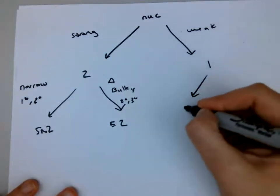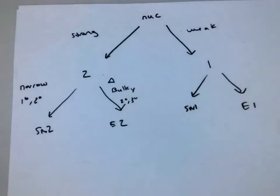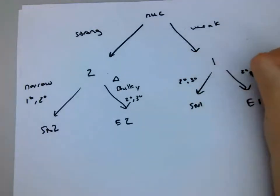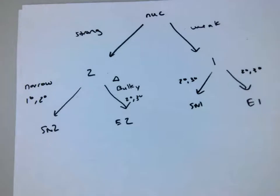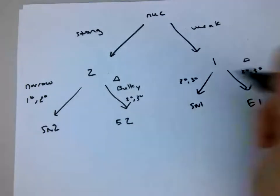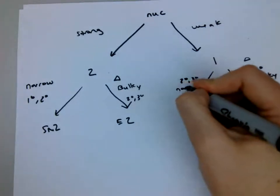Now for SN1 versus E1, this one's harder. Because they're a carbocation, they both are actually going to need a secondary or tertiary. Primary carbocations are not really stable. Heat is still going to favor E1, and bulkiness is still going to favor E1. For SN1, really the biggest thing is secondary or tertiary or if it's narrow.